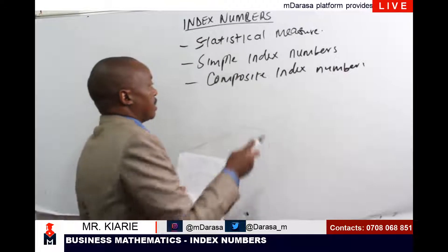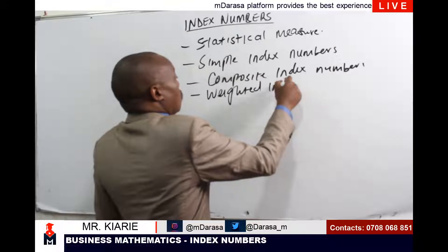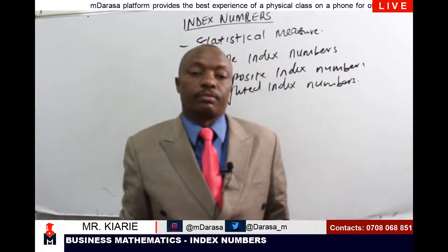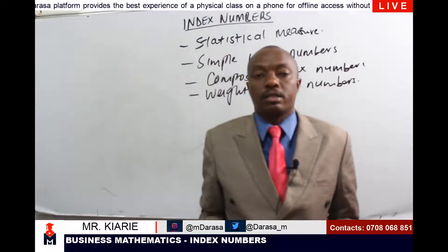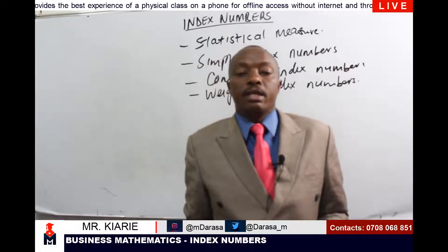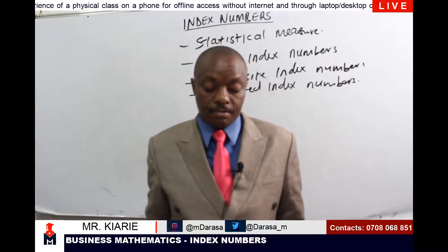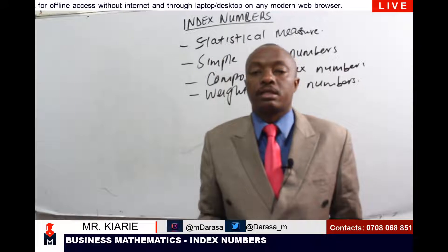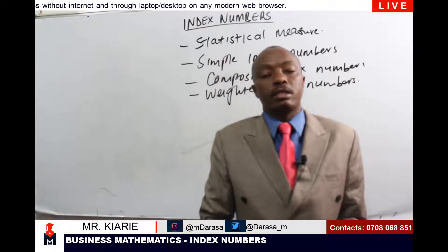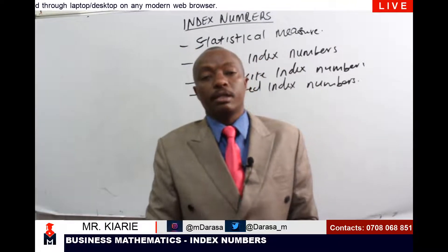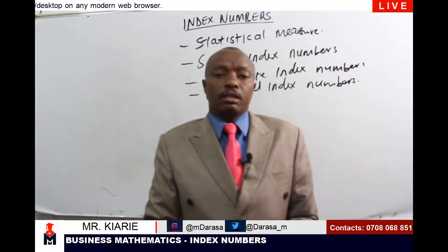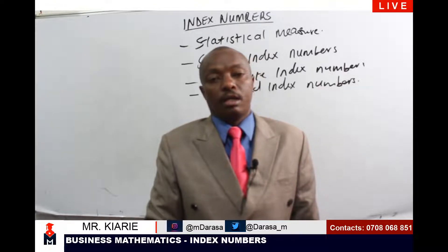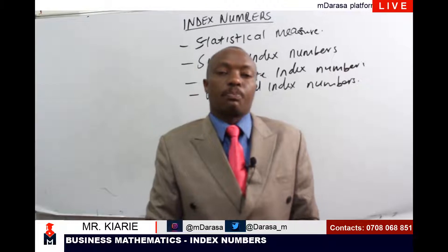Weighted Index Numbers: These are index numbers that use the current and the base period weights to determine the changes of two variables, such as price or quantity.